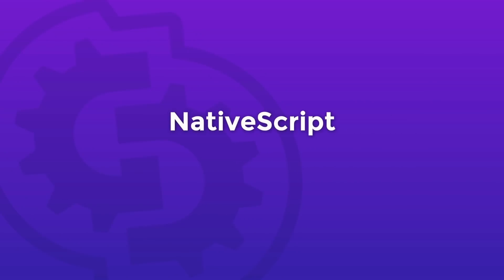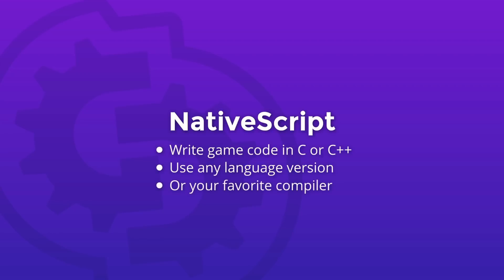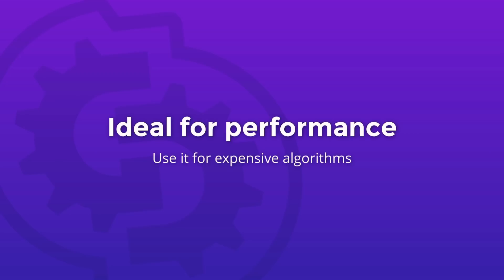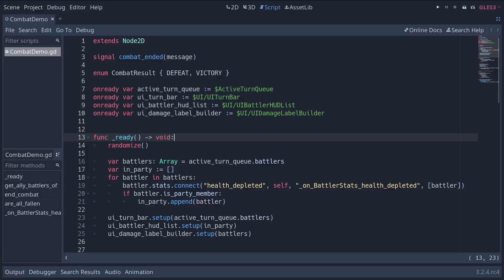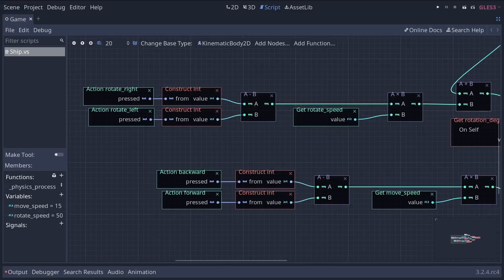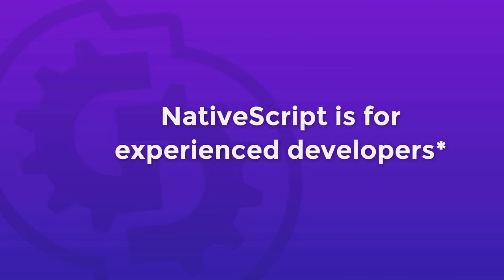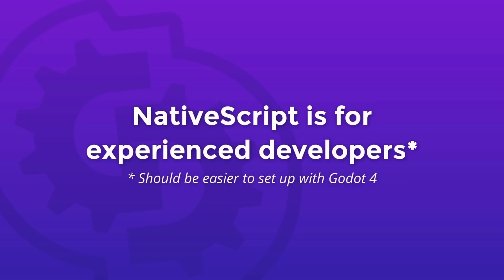Godot ships with a technology called GDNative that allows you to write game code in C or C++ without needing to recompile or even restart Godot. You can use any version of the language or mix compiler brands and versions for the generated shared libraries, thanks to the use of an internal C API bridge. C and C++ are the best choices for performance. You don't need to use them throughout an entire game, as you can write other parts in GDScript, C Sharp, or Visual Script, which will be more productive. When working with GDNative, the available types, functions, and properties closely resemble Godot's actual C++ API, so it feels a bit more like programming inside the engine. But this is an advanced feature and you need to be somewhat tech-savvy to use it — it's really for developers who are used to compiling their code.